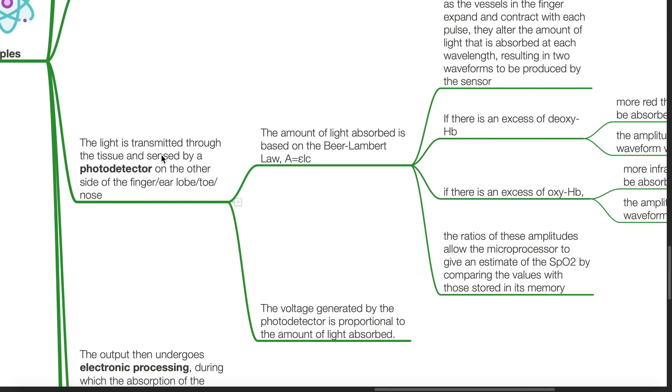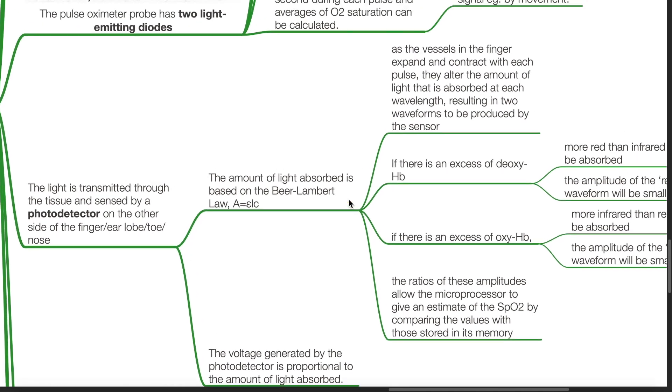The light is transmitted through the tissue and sensed by a photodetector on the other side of the body part that is measured, such as the finger, earlobe, toe or nose. The amount of light absorbed is based on the Beer-Lambert law.